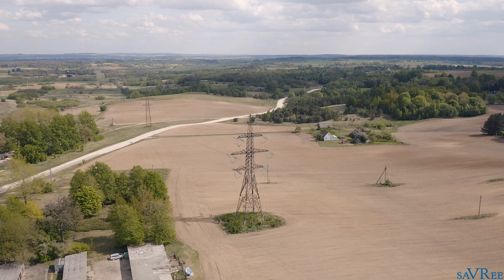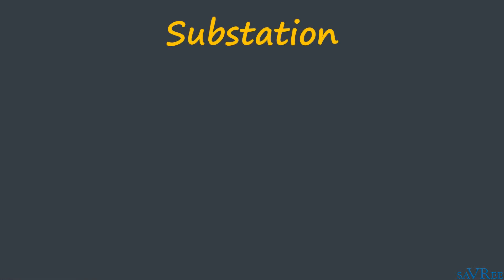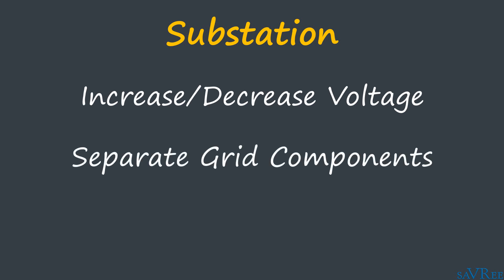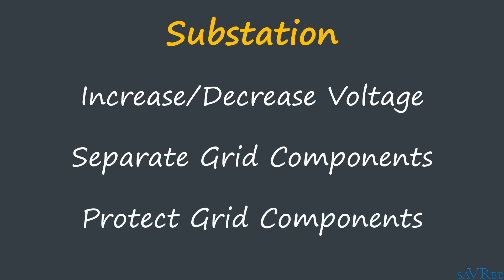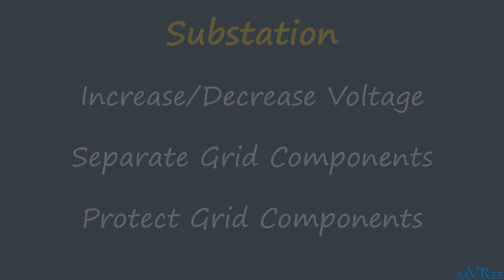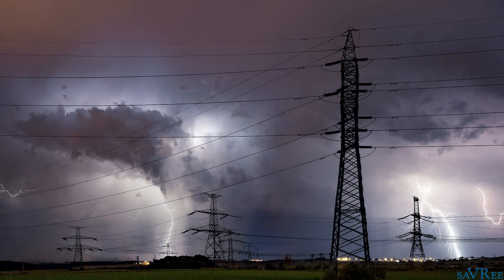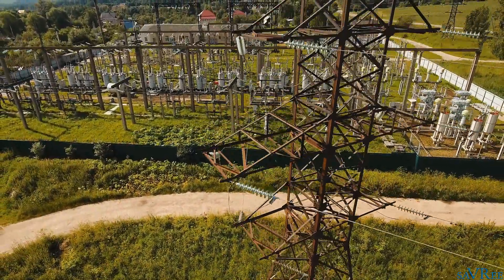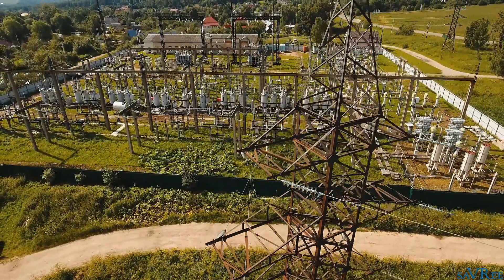We're now distributing our power across potentially hundreds of kilometers before reaching the next part of the power grid. Once again we reach a substation. Substations contain all the equipment we need to reduce and increase voltage, but they also allow us to separate various parts of the grid from each other. This means we can protect different parts of the grid so that if we have lightning strikes or power surges we can isolate certain areas rather than have a complete blackout, increasing the reliability of the grid.